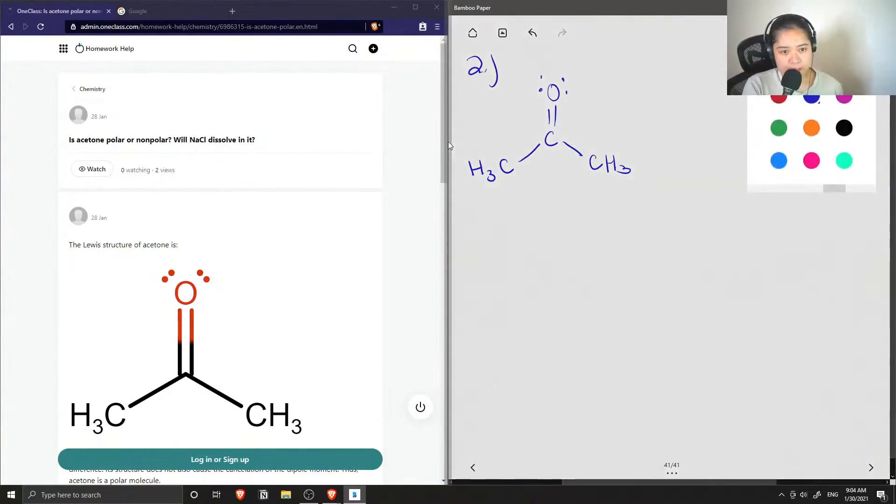To find out whether or not acetone is polar or nonpolar, we need to calculate the electronegativity differences between carbon and oxygen, and carbon and hydrogen.